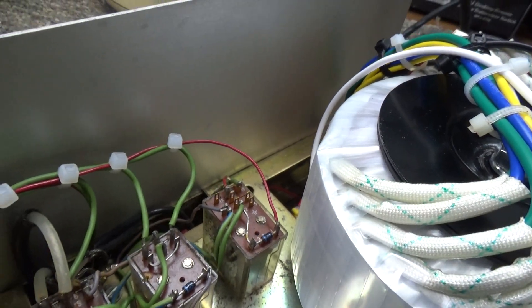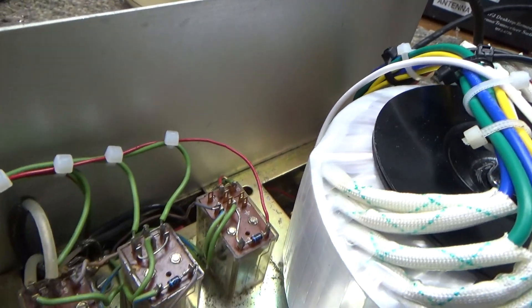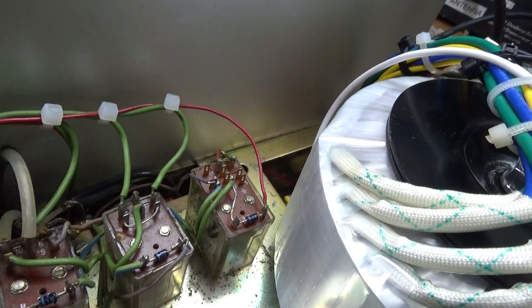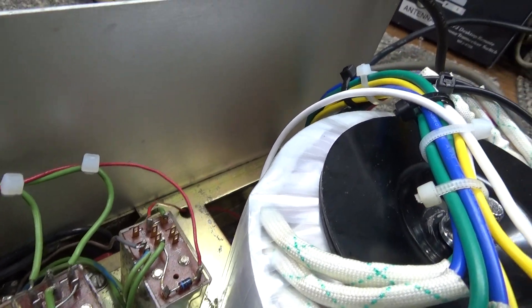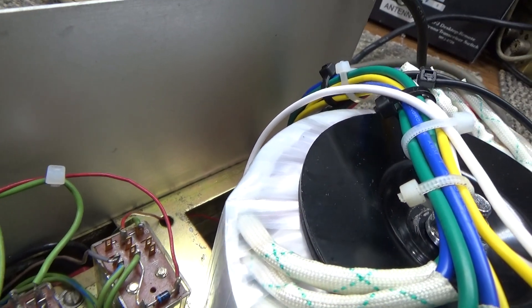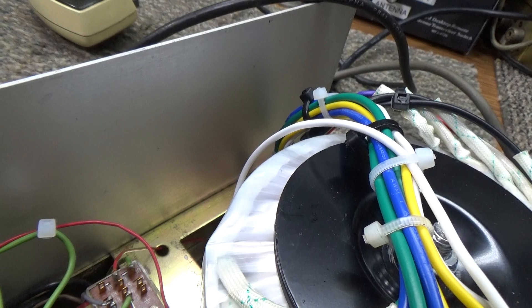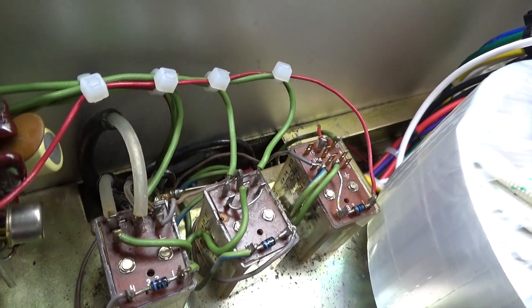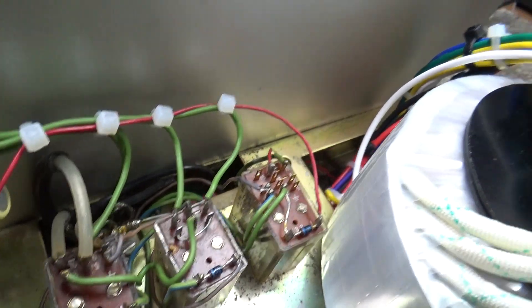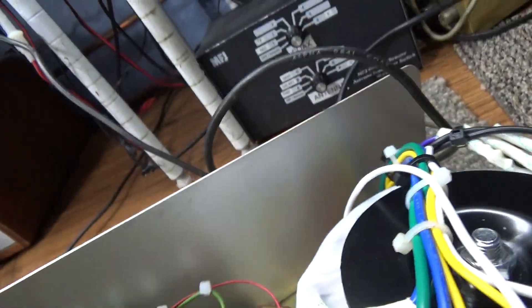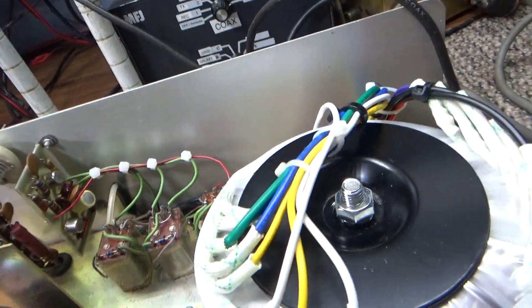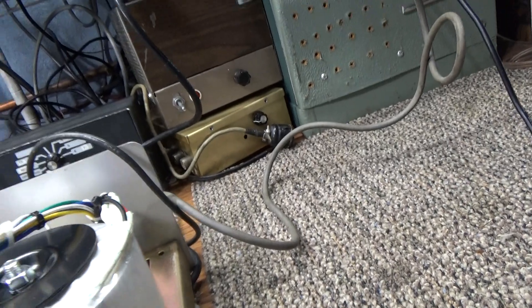The toroid transformer, the relays. It's got three relays. It uses one for the preamp, one to key up the amp and the high voltage to turn it on only when the amp is keyed, and the third relay is just the input and output. So this amp has three relays going on.